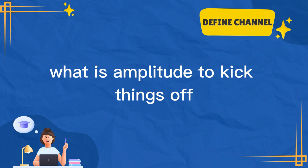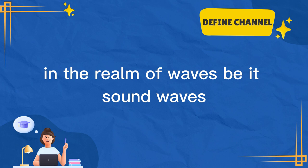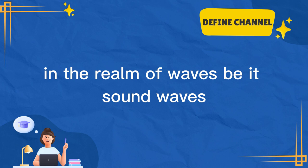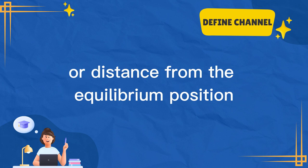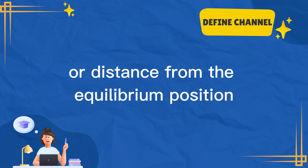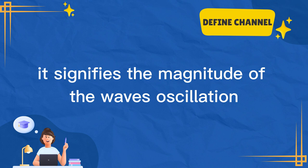What is amplitude? To kick things off, let's demystify the term amplitude. In the realm of waves, be it sound waves, light waves, or any other form, amplitude refers to the maximum displacement or distance from the equilibrium position. Essentially, it signifies the magnitude of the wave's oscillation or the intensity of its disturbance.